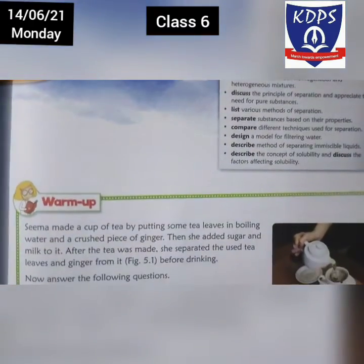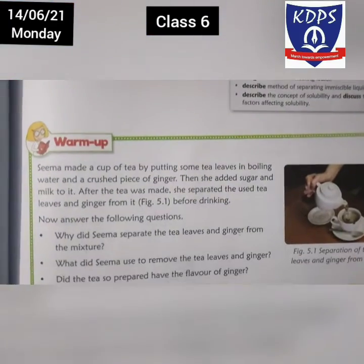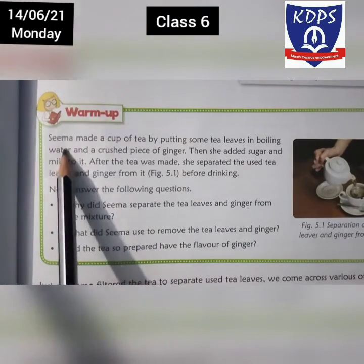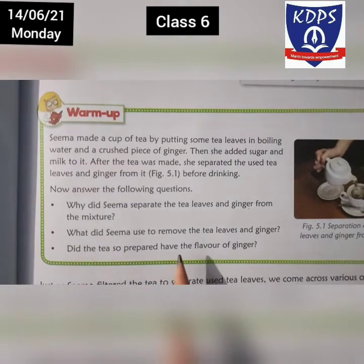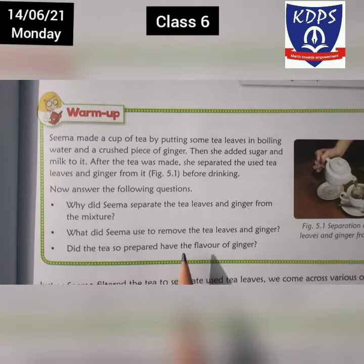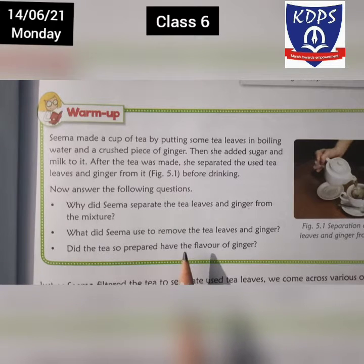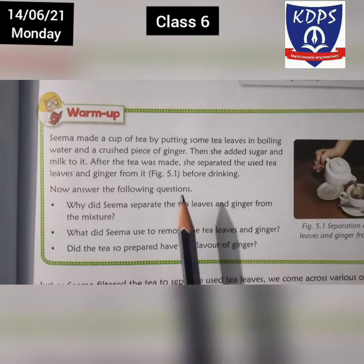We will start this chapter with a warm-up activity. Seema made a cup of tea by putting some tea leaves in boiling water and a crushed piece of ginger. Then she added sugar and milk to it. After the tea was made, she separated the used tea leaves and ginger from it before drinking.